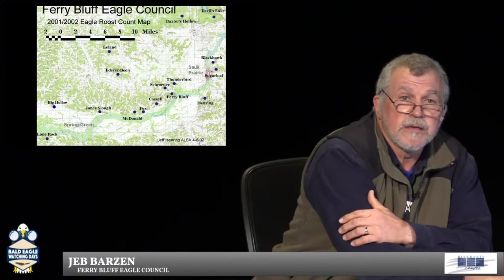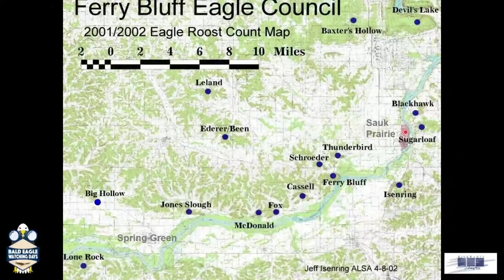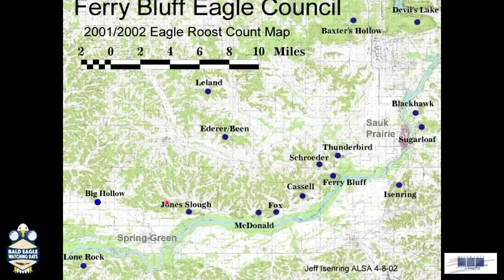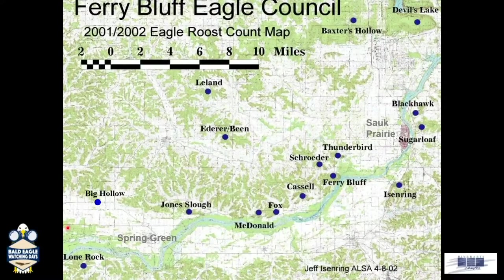This is Prairie du Sac, Wisconsin. We look from the river at Sauk Prairie on the northern end, all the way down to the village of Lone Rock, which is just right off the screen — about 35 miles of river.